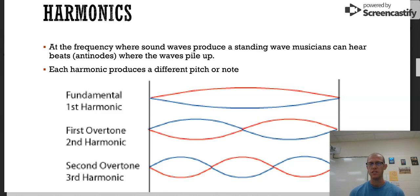These are called standing waves. Harmonics are what we use and work with when we talk about musical instruments. At the frequency where a sound wave produces a standing wave, musicians can hear beats where the waves pile up. Each harmonic produces a different pitch or note.